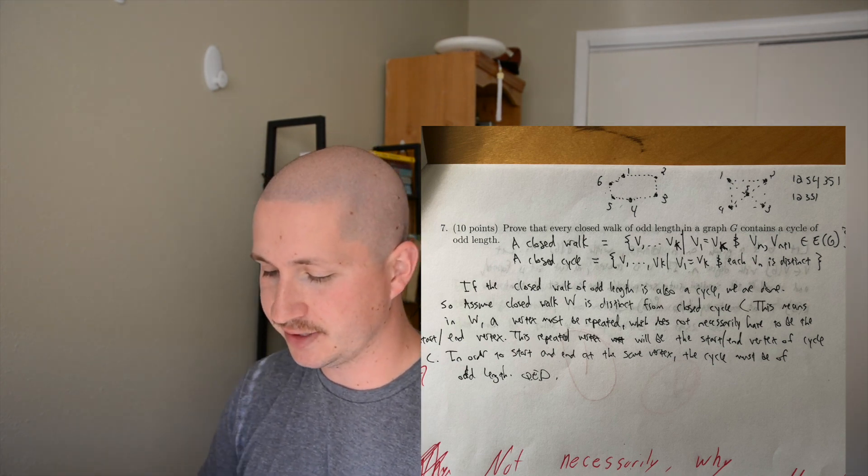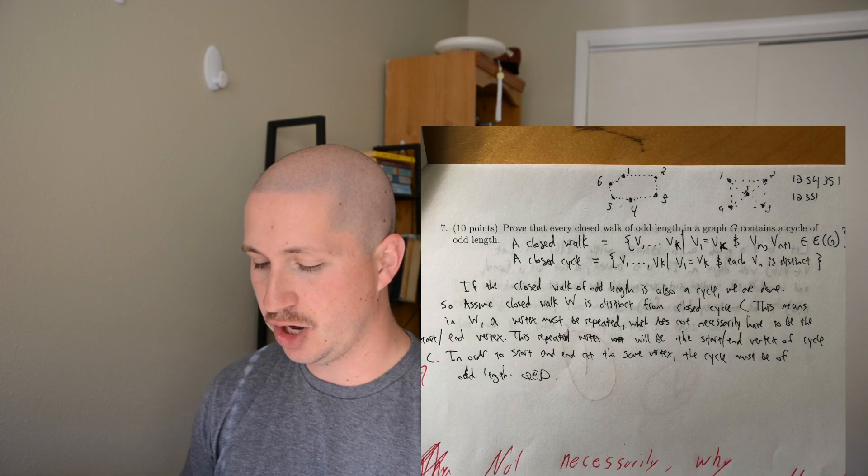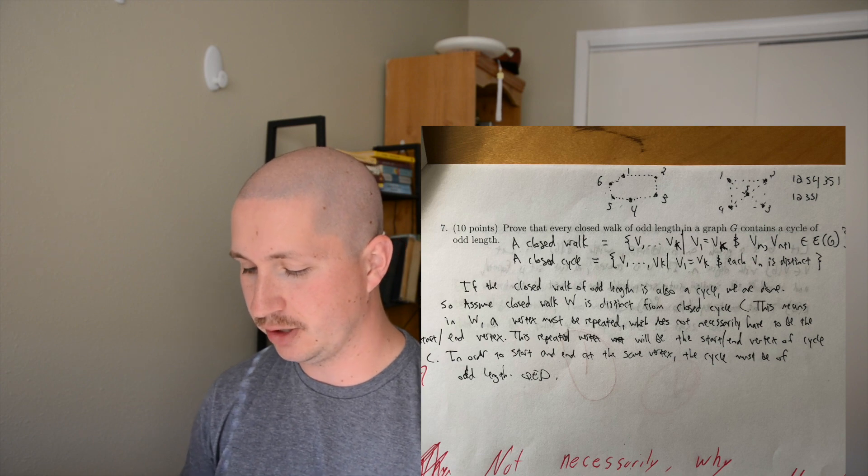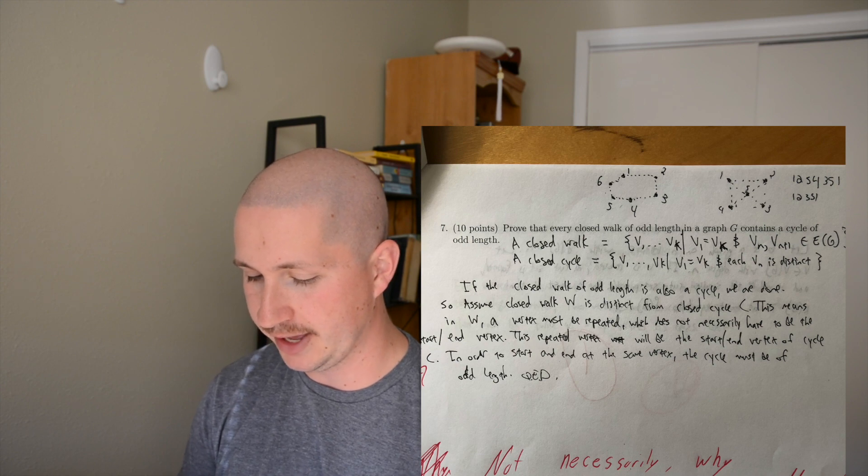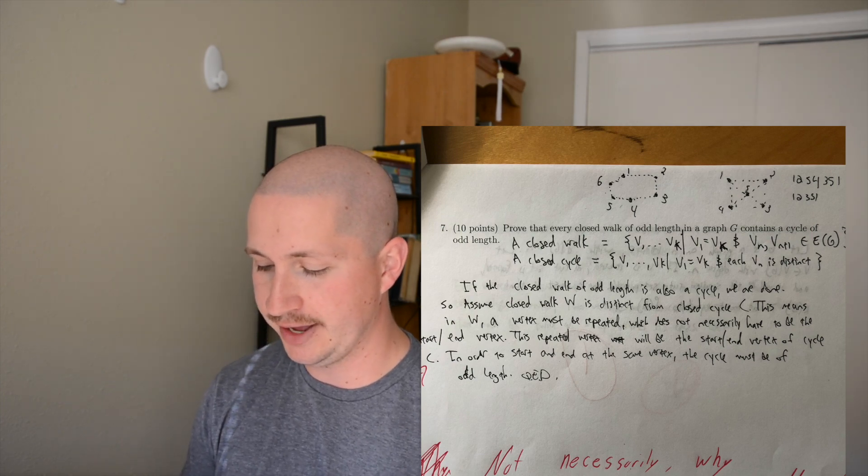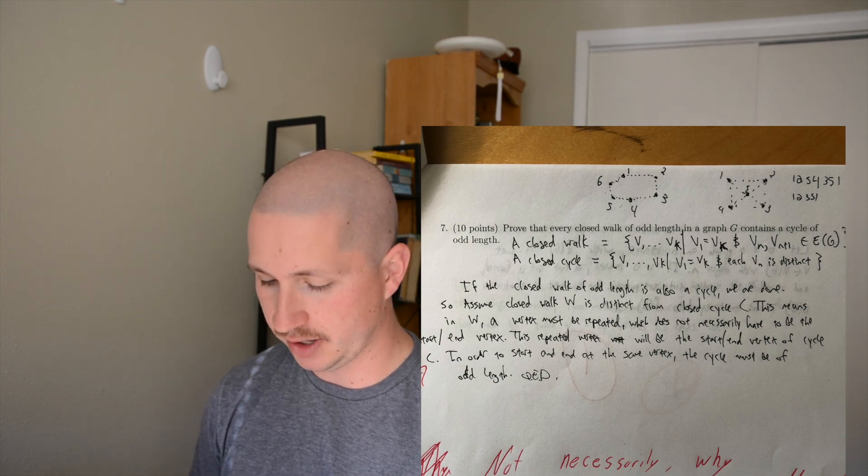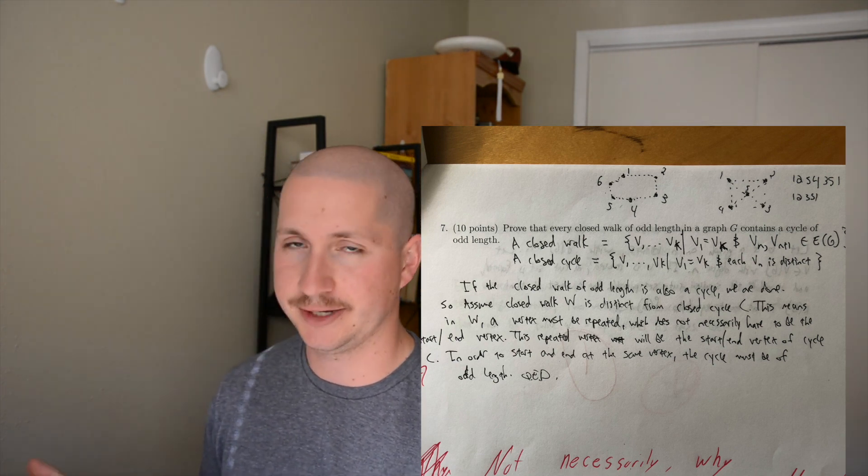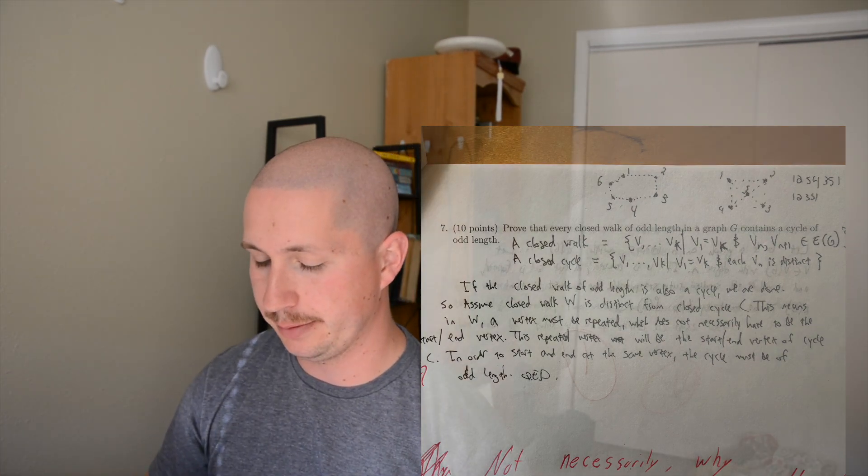I said if a closed walk of odd length is a cycle, we're done - it's true by definition. Assume the closed walk W is distinct from a closed cycle. That means in W a vertex must be repeated, but does not necessarily have to be the start or end vertex. The repeated vertex must be the start and end by definition of a cycle, so in order to start and end on the same vertex, the cycle must be of odd length. I didn't totally hit that nail on the head, kind of missed. They gave me, it looks like, 6 out of 10. Could have been a little bit more rigorous, kind of skipped around a little bit.